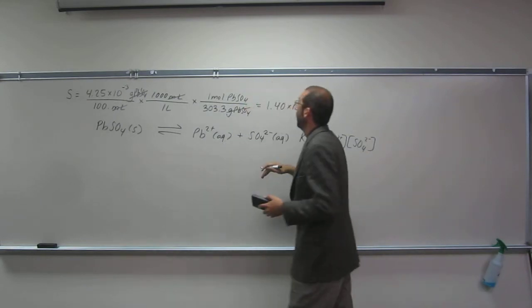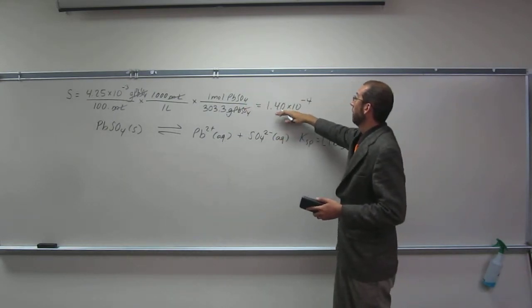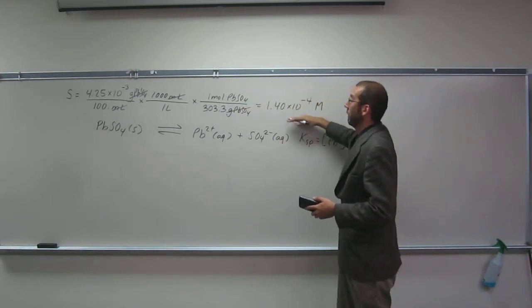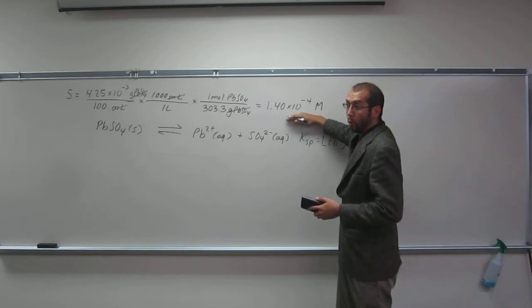And to three sig figs, I get 1.40 times 10 to the negative 4.